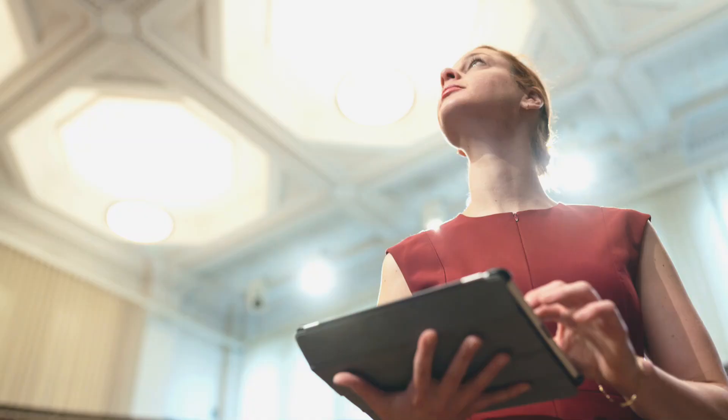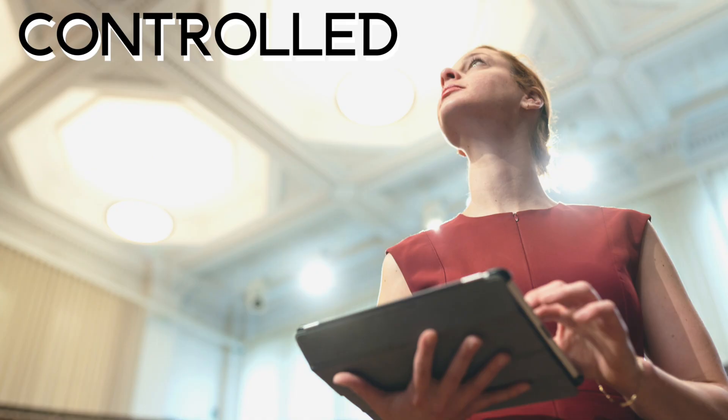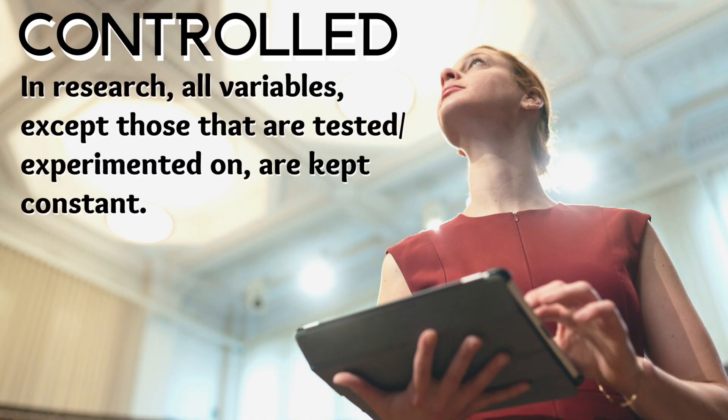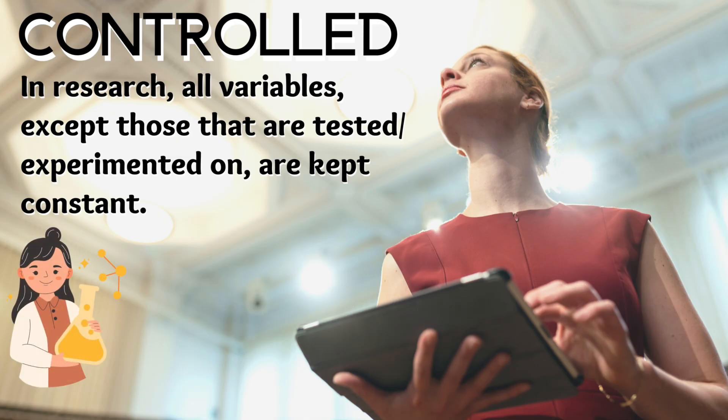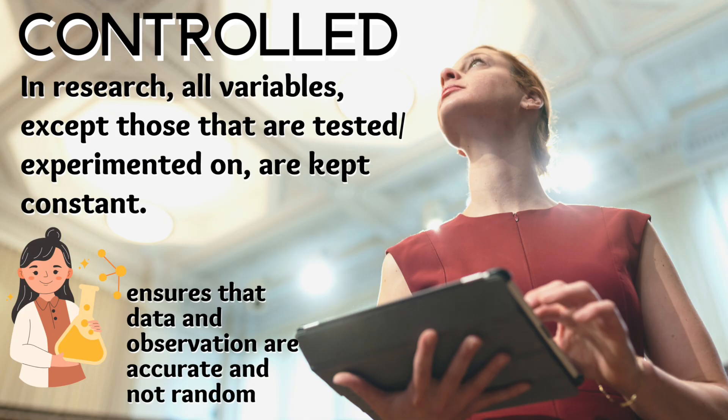Controlled: In research, all variables except those that are tested or experimented on are kept constant. As a researcher, controlling an experiment is critically important to make sure that your observations are accurate and not just random events.